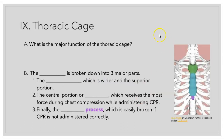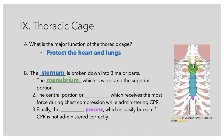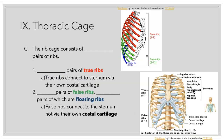Now for our thoracic cage. The major function of this will be to protect the heart and lungs. Looking at the anterior aspect, we can see the sternum, which is broken up into three different parts: the manubrium, which is the wider superior portion; the body, which is the central portion that receives the most force during chest compressions while administering CPR; and the xiphoid process, which is easily broken if CPR is not administered correctly.